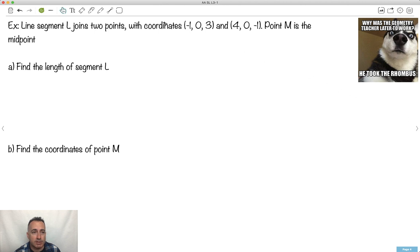So then let's go ahead and do a real example. Why was the geometry teacher late for work? So line segment L adjoins two points. Here are the coordinates. Good luck drawing that in 3D. I don't know how to do that. And M is called the midpoint. We're supposed to find the length of segment L. The length will just be the distance. I'm going to use that distance formula. On a test, you should actually write down the equation you're going to use. This tells the person marking it that you know what you're doing.